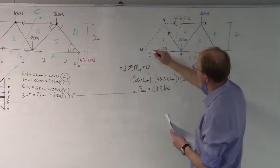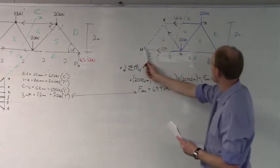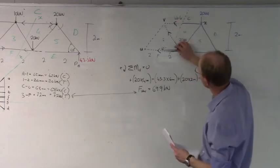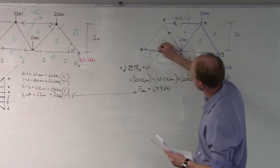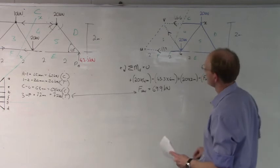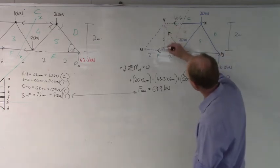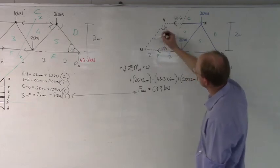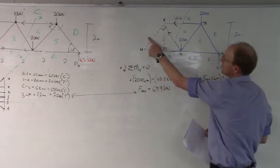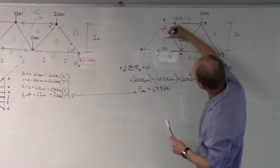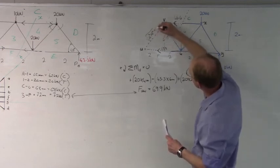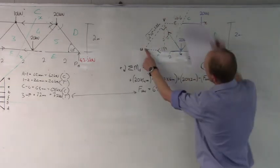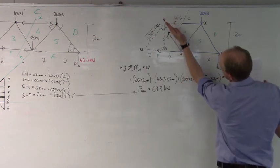Taking moments about this point: 43 times 8, 20 times 6, 20 times 4, and then force VW times the perpendicular distance. The 69.9 acts straight through U, so that cancels. To find the perpendicular distance from U to the line of VW — since this is a 90-degree angle and we have a 45-degree member — with both sides equal to 2 meters, it's just the square root of 2 squared plus 2 squared, which is 2.83 meters. So force VW times 2.83 meters is used in the equation.